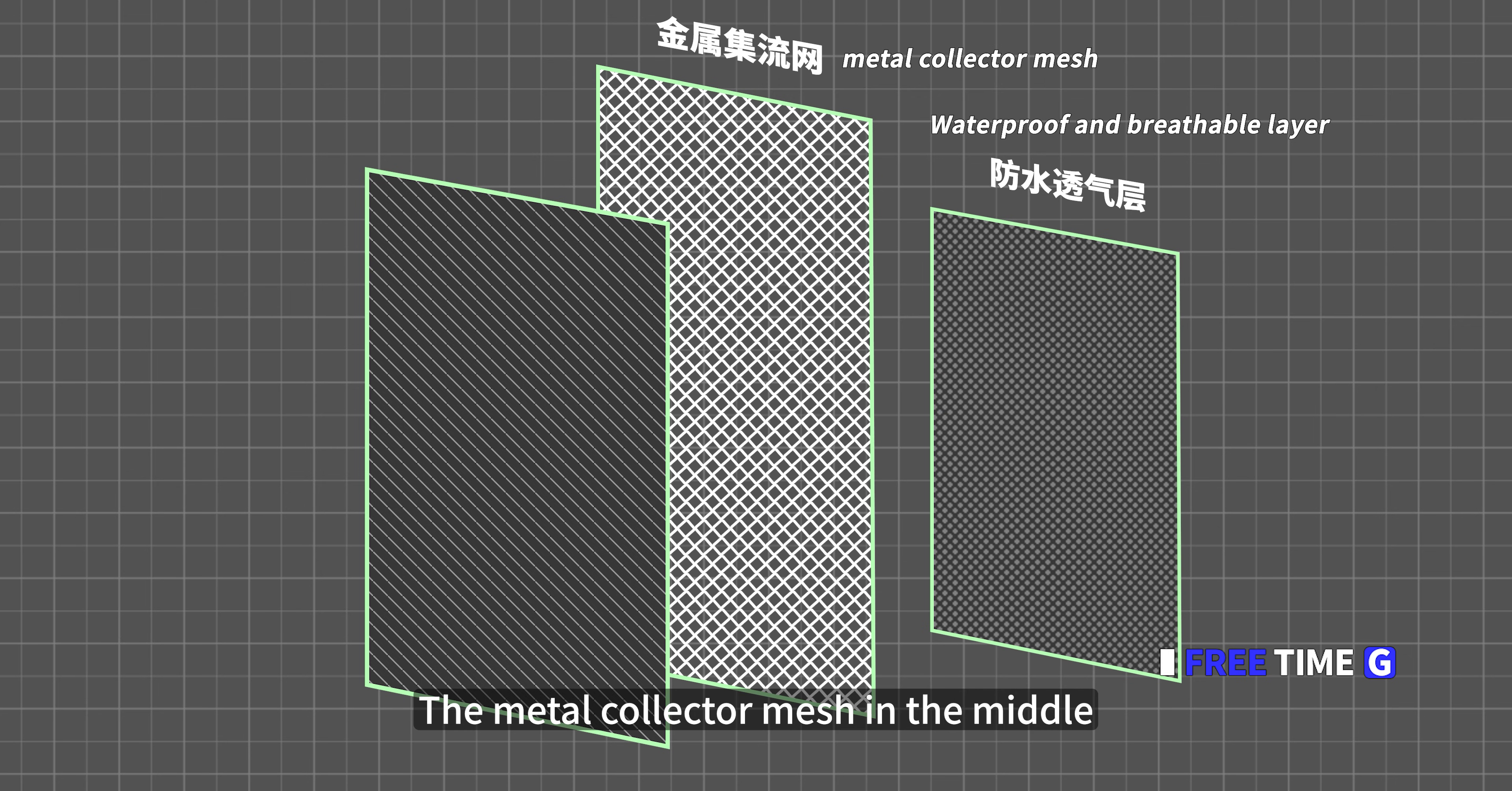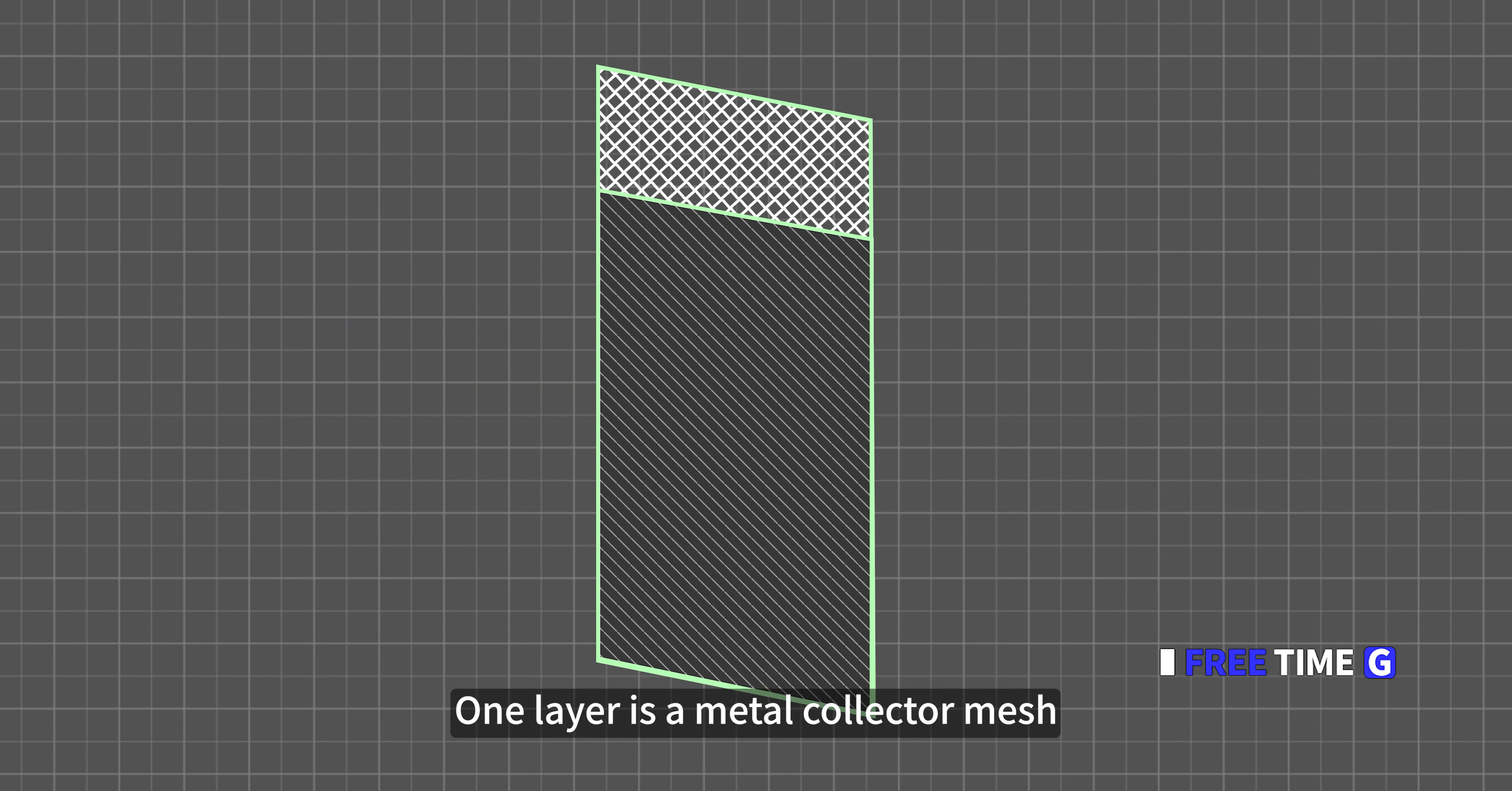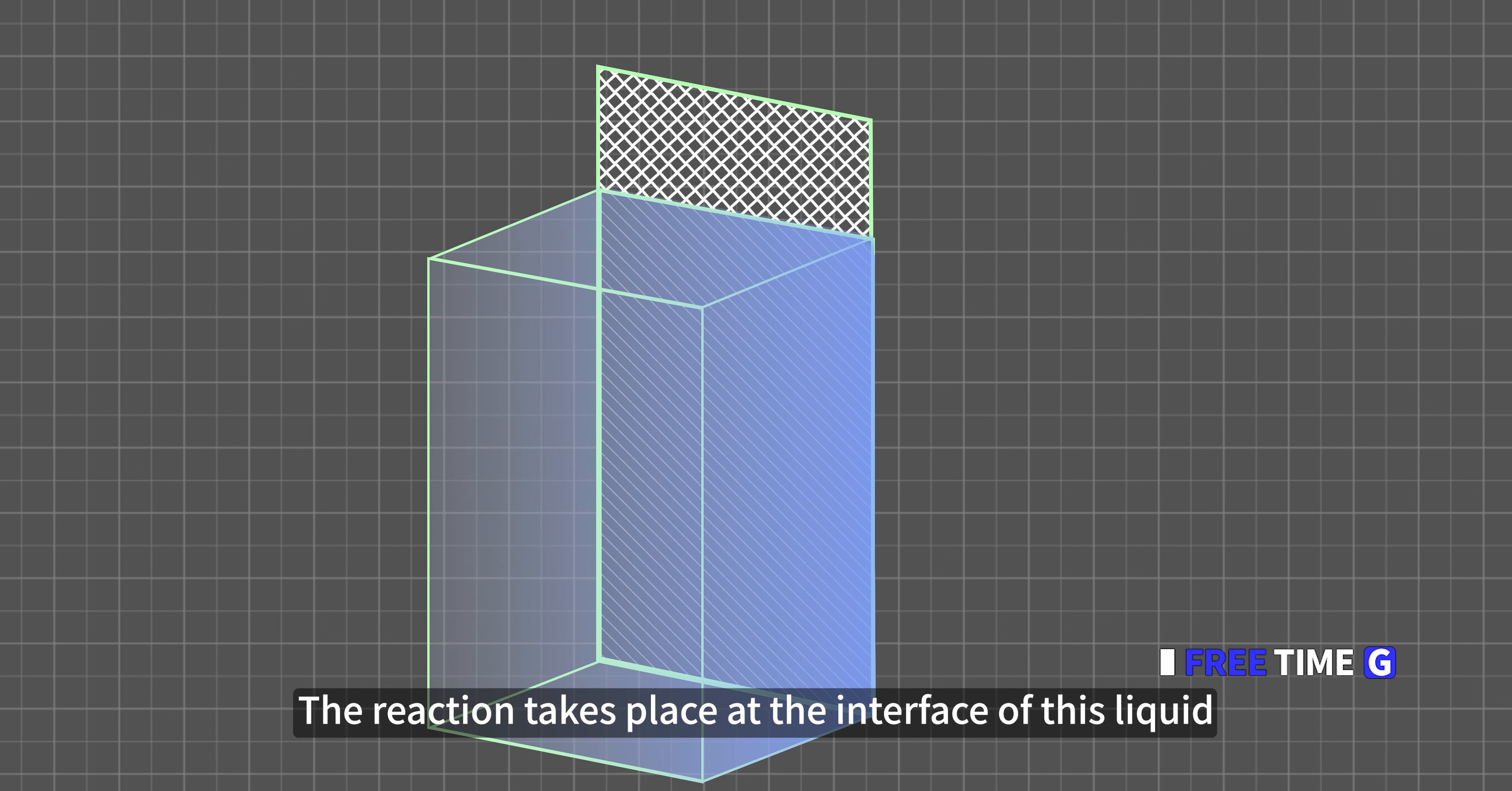Generally speaking, the air electrode has a three-layer structure. The outer layer is a waterproof and breathable layer. The metal collector mesh in the middle conveniently transport electrons to various areas. It can also serve as a skeleton to support the carbon pole. The inner layer is the reaction layer. The reaction takes place in this layer. Want to improve output efficiency? You can add some catalysts, for example, some catalysts such as platinum and silver.